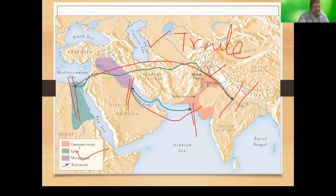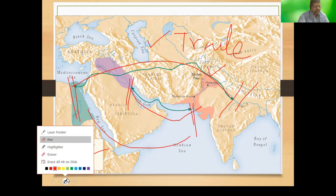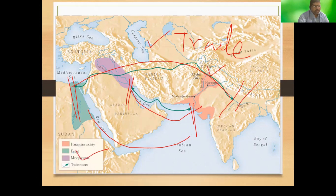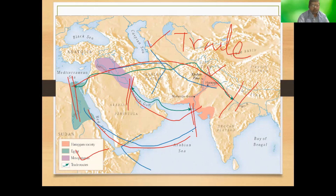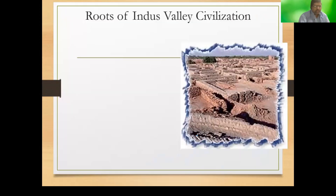The Egyptian civilization had a wonderful connection with this particular civilization. Mesopotamia also had a wonderful connection, and these trade routes were among the most important in world history. For students preparing for competitive exams, it is important to know these significant trade relations. These are key trade routes that connected the Indus Valley Civilization with the wider ancient world.